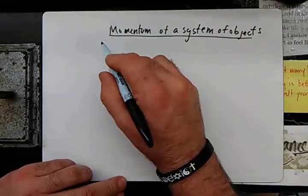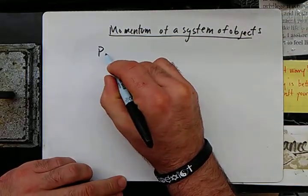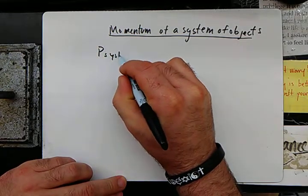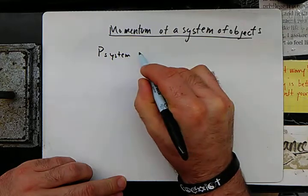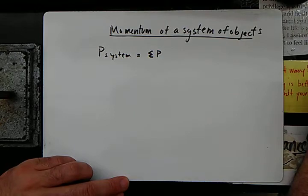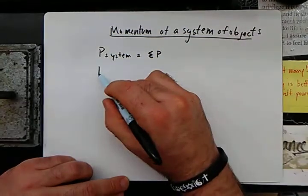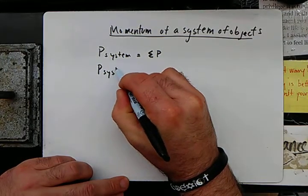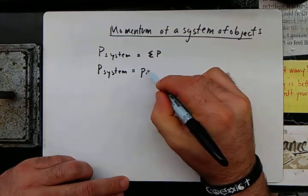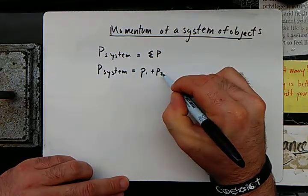Let's just write out the formula for it. The P of a system, or momentum of a system, we'll call it the sum of momentum. So the momentum of a system is momentum one plus momentum two